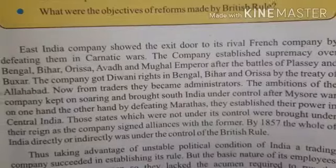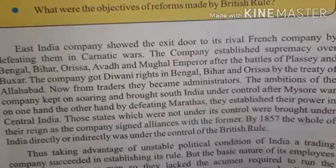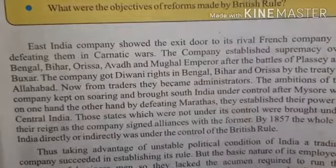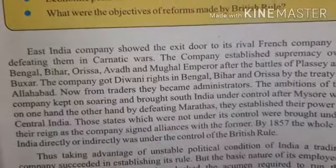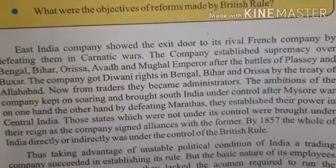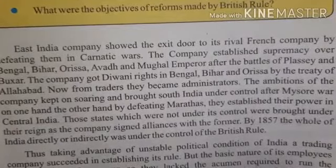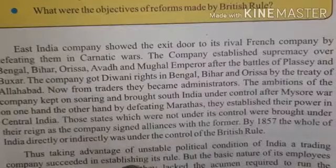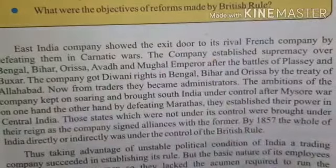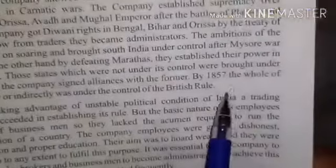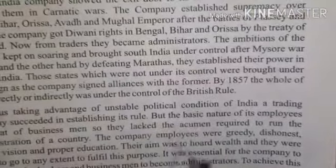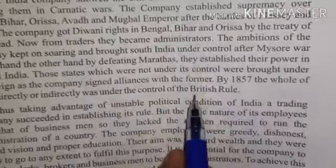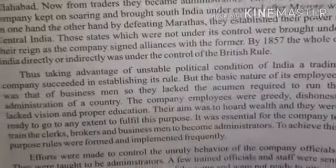The East India Company was growing at a very fast rate in India, and by 1857 India was under the control of British rule. That was all about the last chapter we studied.